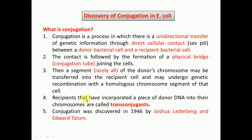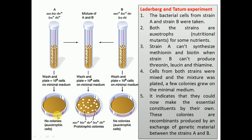Recipients that have incorporated a piece of donor DNA into their chromosome are called transconjugates. Conjugation was discovered in the year 1946 by Joshua Lederberg and Edward Tatum. There are two different bacterial strains A and B, and these two strains are auxotrophs or nutritional mutants for some nutrients. Strain A cannot synthesize methionine and biotin, whereas strain B cannot synthesize threonine, leucine, and thiamine. Cells from both strains were mixed and the mixture was plated on an agar plate, and it was observed that a few colonies grew on minimal medium, meaning they had converted into prototrophic bacteria.